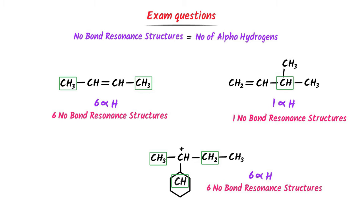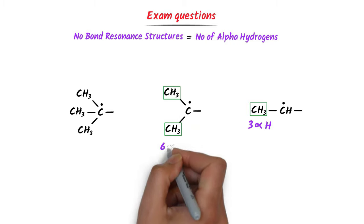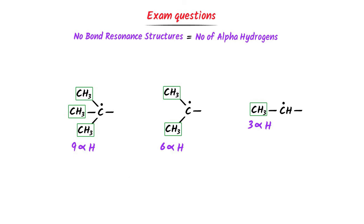Lastly, which free radical is more stable? One free radical has three alpha hydrogens, another has six, and the third has nine. We already know that the more the alpha hydrogens, the more the stability. The free radical with nine alpha hydrogens is the most stable and the one with three is the least stable. This is the order of stability of these free radicals. I hope you have learned all about hyperconjugation.